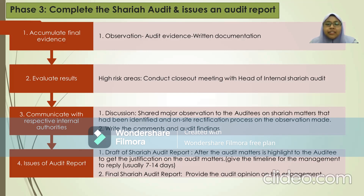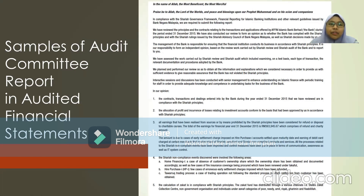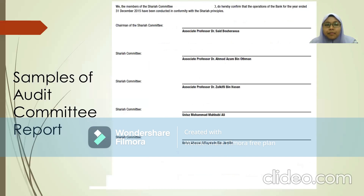Lastly, they issue the audit report. First, a draft Sharia audit report is issued after audit findings are highlighted to the auditee, to get their justification. Usually, the auditor gives the management 7 to 14 days to reply. Then the final Sharia audit report is issued, providing the auditor's opinion on the engagement. Here is a sample of an audit committee report in an audited financial statement, where the auditor has expressed their opinion based on findings related to Sharia methods. This report is authorised by the chairman and four members of the Sharia committee.